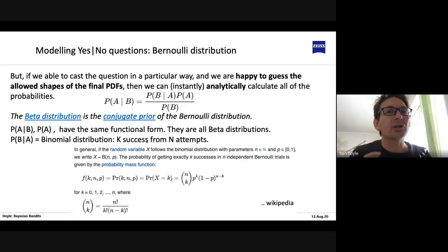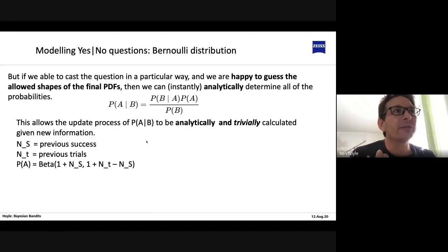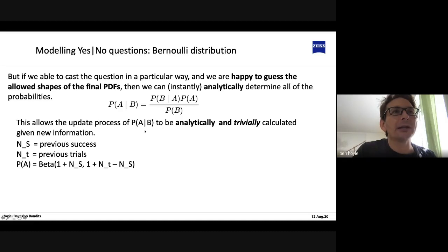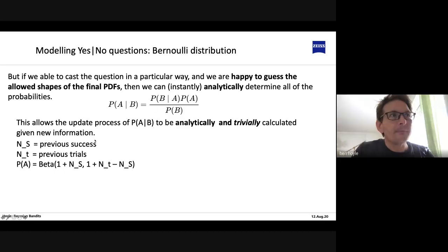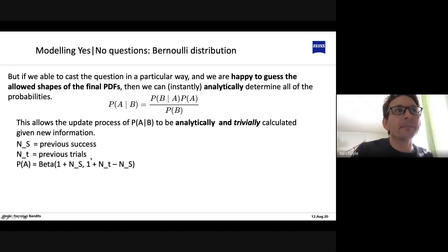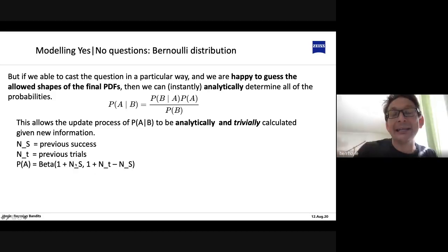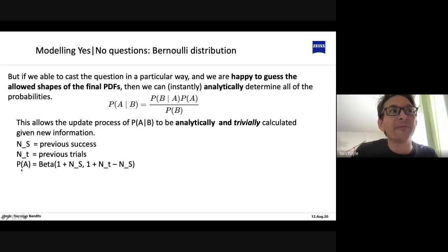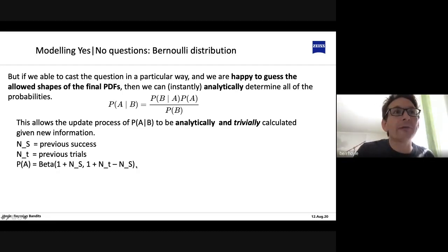The bottom line is: imagine we want to update our knowledge of our probability distribution function — say the probability of a click-through for a particular creative, given new information. We can calculate this from our prior. If we've already shown this creative to users and have ns previous successes (click-throughs) from nt previous trials, then our prior probability distribution function looks like Beta(1 + ns, 1 + nt − ns).